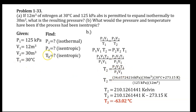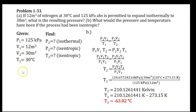Plugging in values: T2 equals 34.65724216 kilopascals times 30 cubic meters times (30 degrees Celsius + 273.15 Kelvin), all over 125 kilopascals times 12 cubic meters. Note that when using any ideal gas equation, temperature must be in Kelvin as it is the absolute scale. This results in 210.1261441 Kelvin. Converting back to Celsius by subtracting 273.15, our final temperature of nitrogen in the isentropic process is negative 63.02 degrees Celsius.